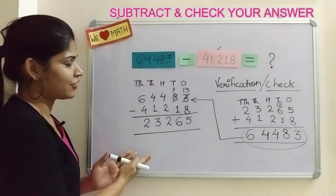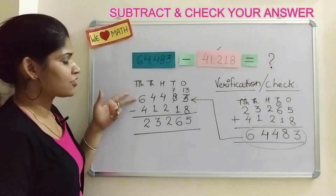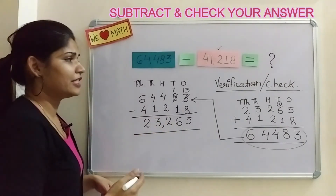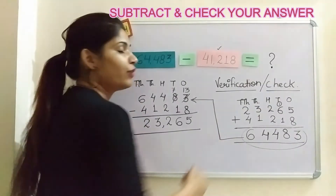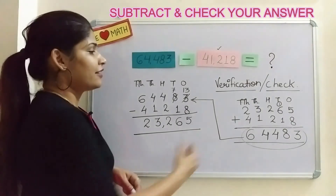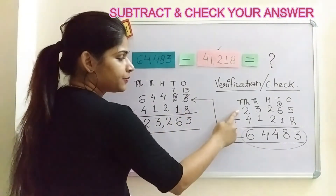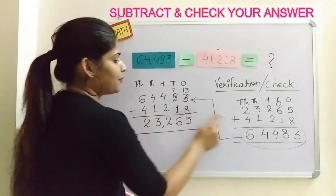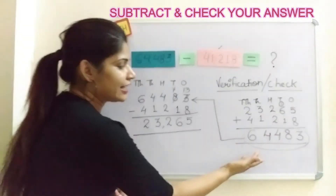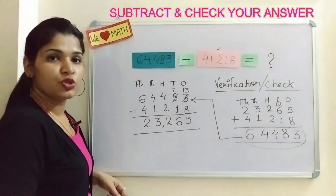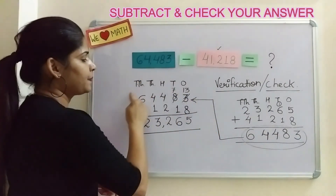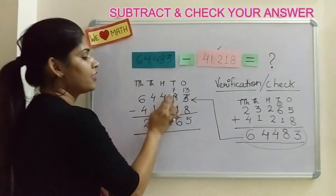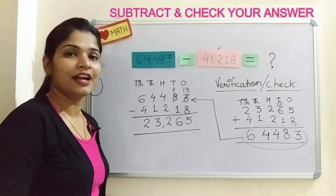Let me recall what we did. On the left hand side we performed the subtraction: we subtracted 41,218 from 64,483 and got the difference as 23,265. After doing this, to check or verify our answer, we perform one more sum — but it will be addition. First we write down the difference at the top, then we write down the subtrahend — the number which we subtracted — and then we perform the addition to get the sum. Finally, we check that the sum should be equal to the minuend, the number from which we subtracted.